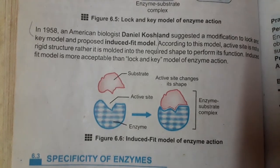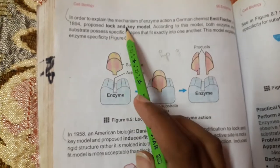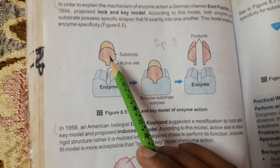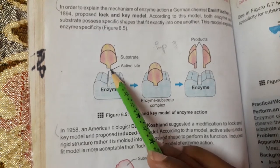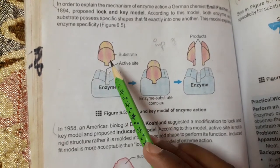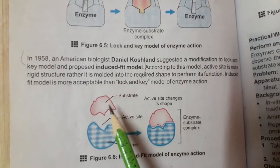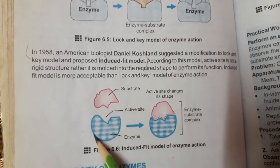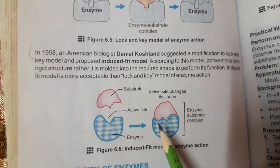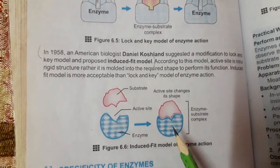The induced fit model is more acceptable than the lock and key model of enzyme action. According to this model, the active site is not a rigid structure — it can be molded according to the required shape to carry out any reaction.